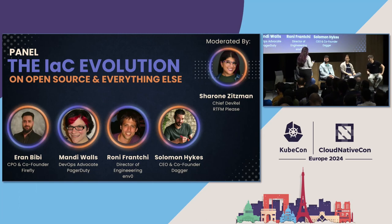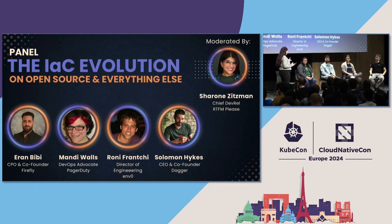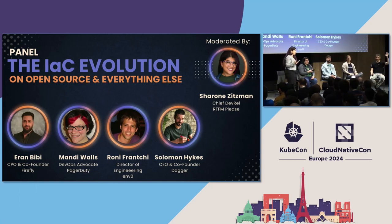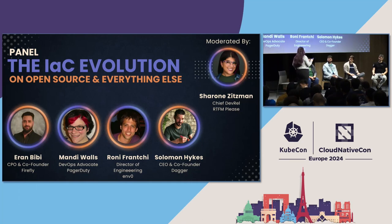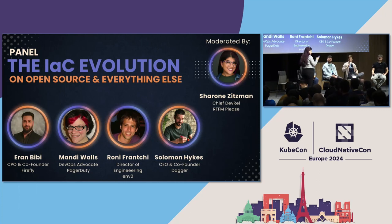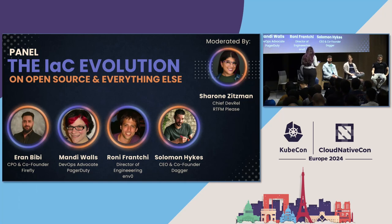Big year in the IAC space. This year was actually 30 years to the OG, CFEngine — who here has used CFEngine? We've come a long way since CFEngine, but also this was the year the poster child Terraform changed its license and the consequent fork happened. Chef has moved on from the world, kind of. And Docker has evolved over time. So let's unpack this decade of the IAC revolution — highlight the things that were the most important milestones and the things that changed the game.